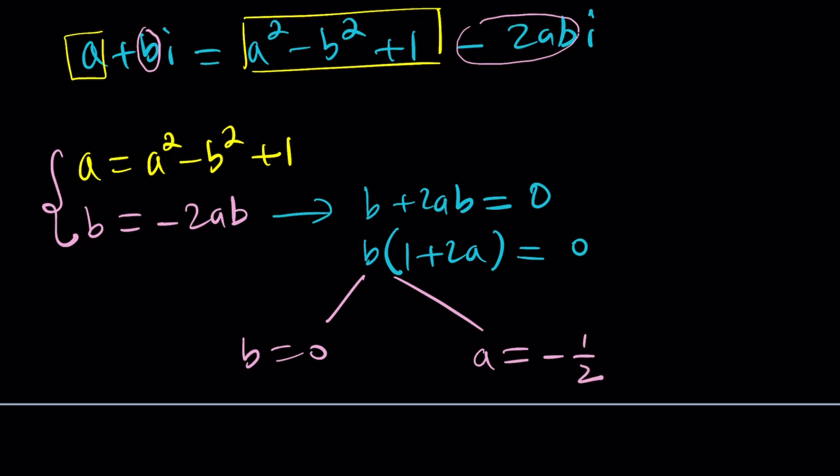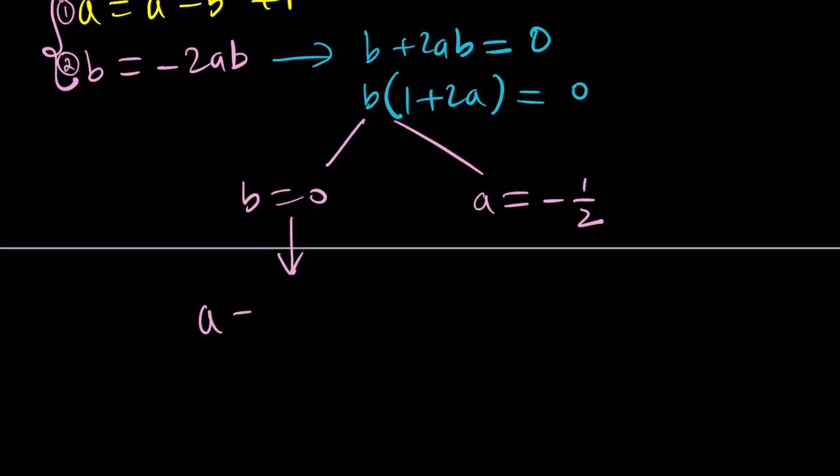And from here we get two solutions. Either B is equal to 0 or A is equal to negative 1 half. And now we're going to use both of these cases with the first equation. In the first equation if you plug in B equals 0 you're going to get A equals A squared plus 1. And from here we get A squared minus A plus 1 equals 0.